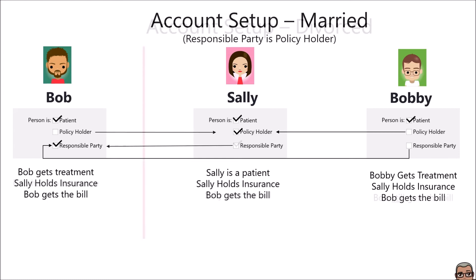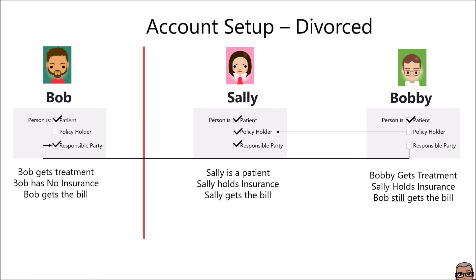Now let's make it more complicated — Sally and Bob divorce. Sally is still a patient, policyholder, and responsible party for herself. Bobby is still a patient, the policyholder is still Sally, and the responsible party can still be Bob — he's always paid the bill. But Bob is no longer connected to Sally; they have their own separate accounts. All of Sally's history came back to her account, and Bob's history is contained in his account.